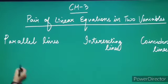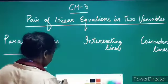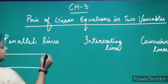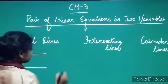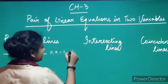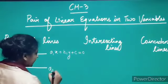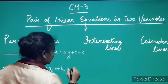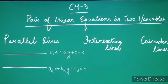What are parallel lines? Parallel lines look something like this. Suppose the equation of this line is given by a1x + b1y + c1 = 0, and the equation of the second line is given by a2x + b2y + c2 = 0. So these are the two equations — we have a system of equations with two equations in two variables.